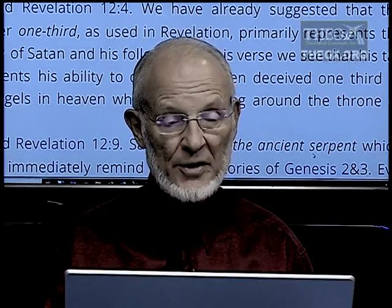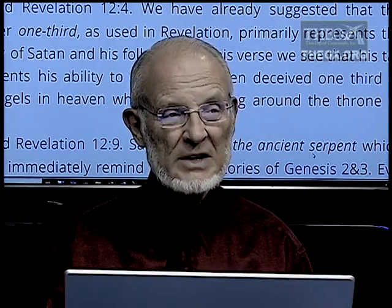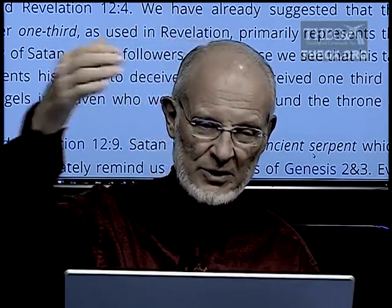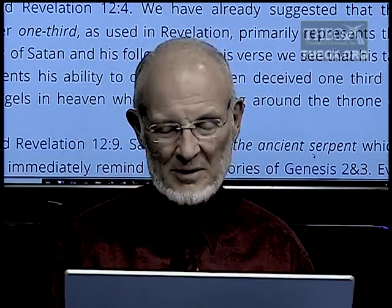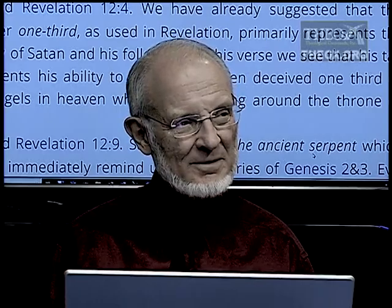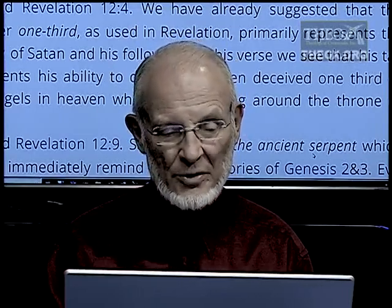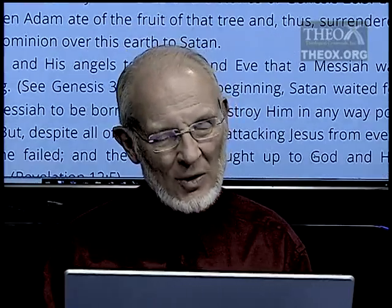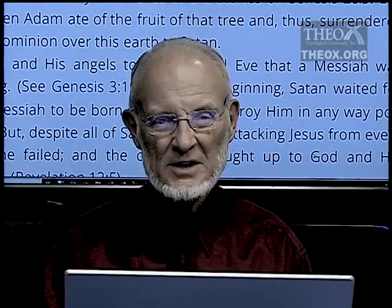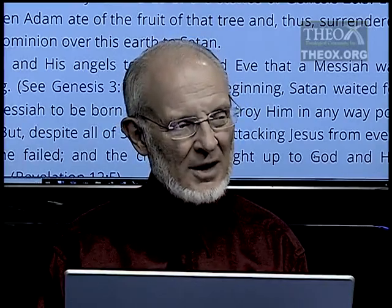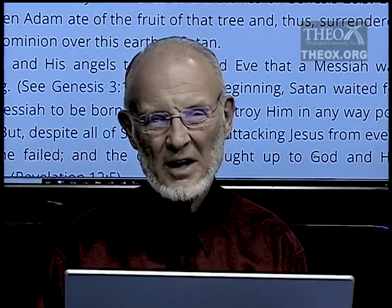The number one-third, as used in Revelation, primarily represents the activity of Satan and his followers. There it is again in Revelation 12:4 — he swept down a third of the stars with his tail. He even deceived one-third of the angels in heaven who were standing around the throne of God. How successful do you have to be as a deceiver to deceive people standing around the throne of God? And it's not just people — it's very intelligent angels.